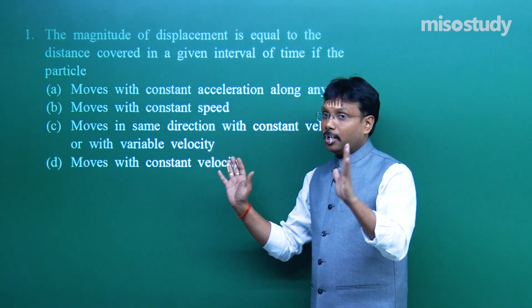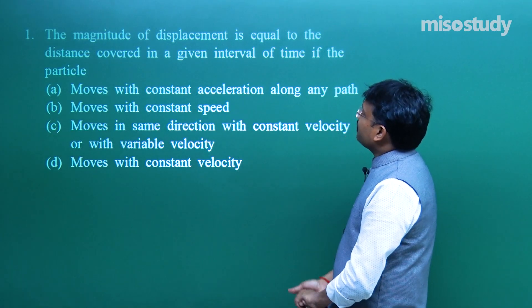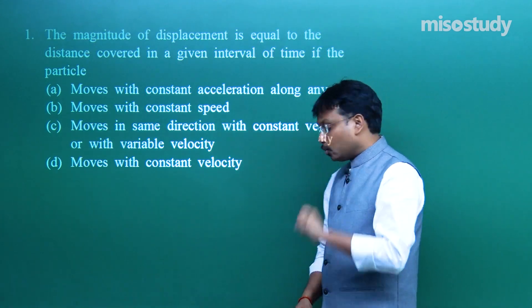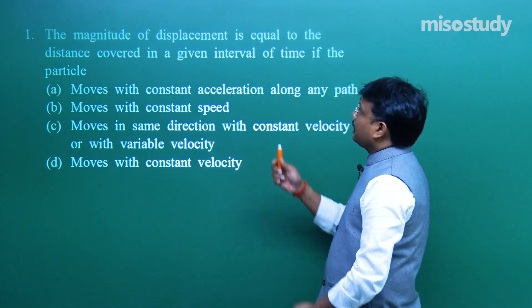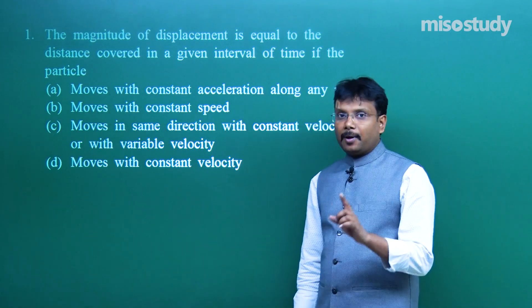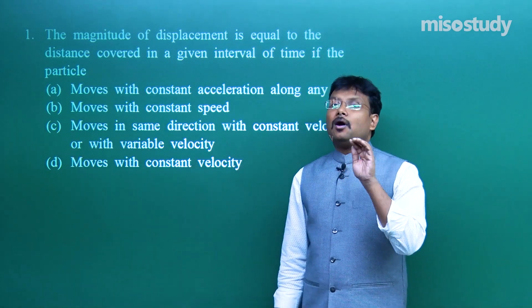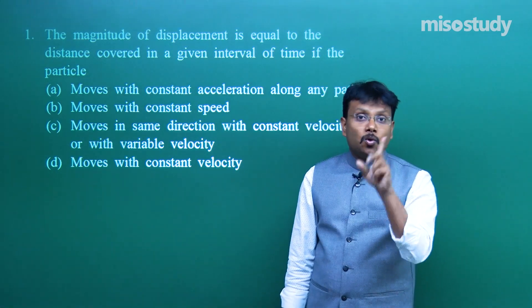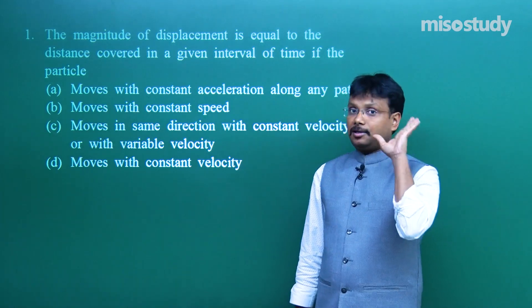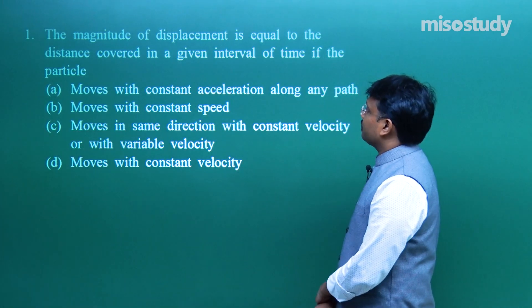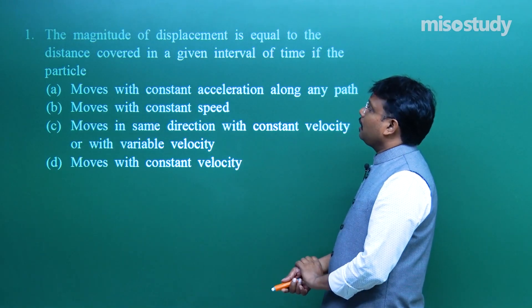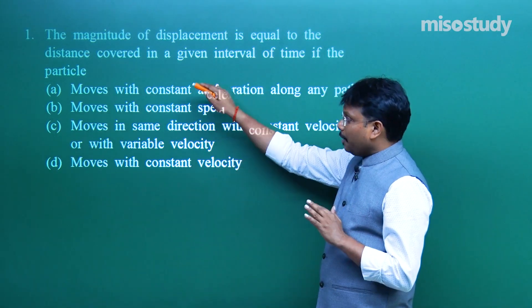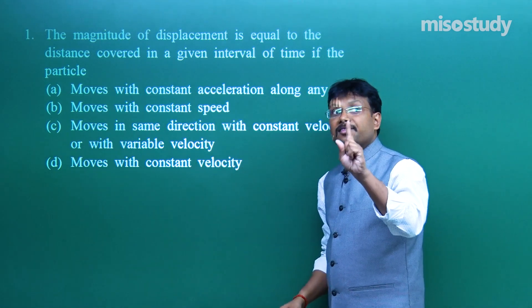चलिए - magnitude of displacement is equal to the distance covered in a given interval of time if the particle. सबसे पहले समझने की कोशिश करिए, question एकदम simple सा है। इसमें कहा गया है कि magnitude of displacement distance के बराबर होगा। Distance और displacement बराबर हो सकते हैं, लेकिन displacement कभी भी distance से ज़्यादा नहीं होगा। Distance, displacement से ज़्यादा हो सकती है। तो ऐसे theoretical questions में आप question समझने के बाद सीधा options को analyze करना शुरू करिए।